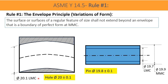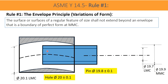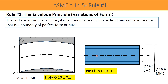If the hole size departs from the MMC size to the LMC size — that is, from the smallest hole to the largest hole — then a change in form is allowed. When the size reaches the least material condition, which is the largest size of the hole, mating becomes possible. The form error allowed is equal to the departure in the size limits.